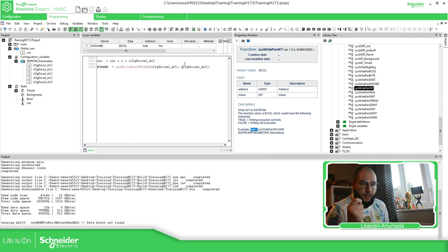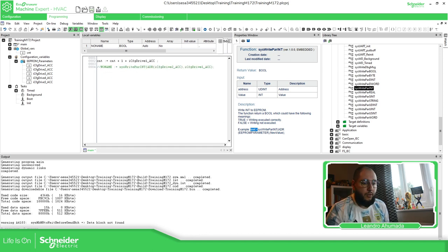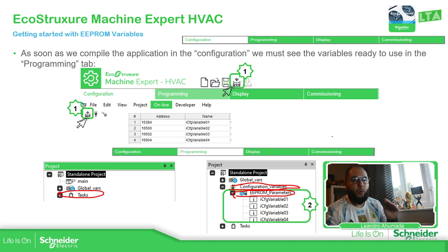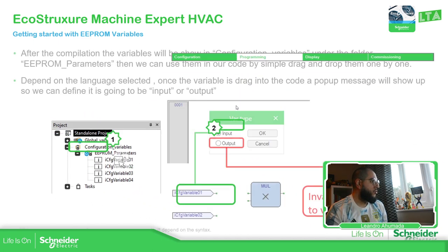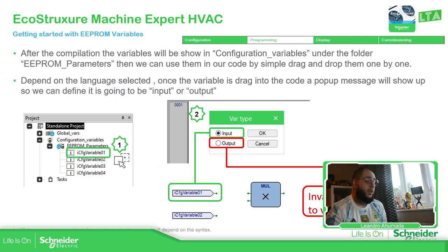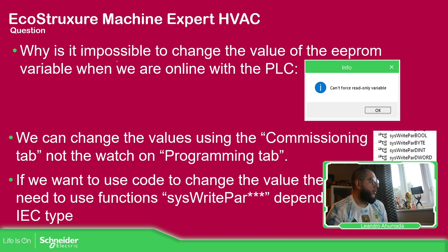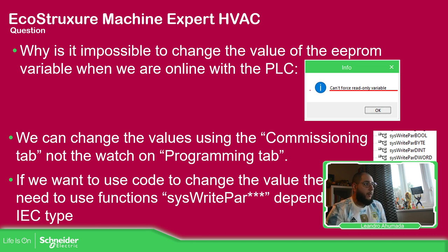This is the complete approach. The key point is that you cannot modify EEPROM values directly via code. The same drag-and-drop approach applies for variables in your code. If you try to write directly and go online with the controller, you'll get the 'Invalid Access' message. However, you can change the value using the Commissioning tab, or via code using the SysWriteBar functions.